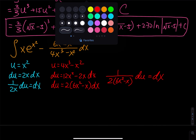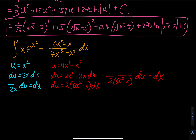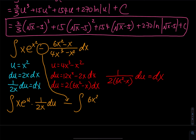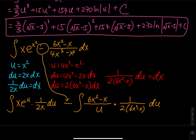After the change of variable, you get: integral of x e to the u times 1 over 2x du, minus the integral of 6x squared minus x over u times 1 over 2 times 6x squared minus x du. The x cancels in the first integral, and the numerator cancels in the second integral.